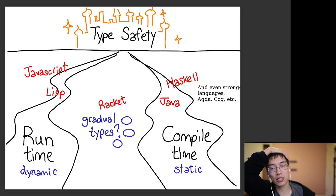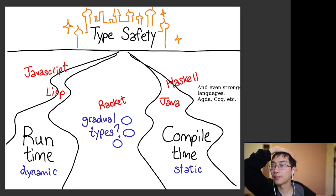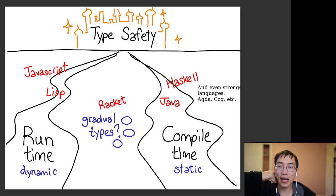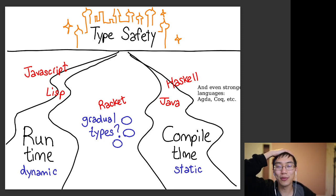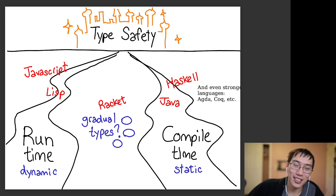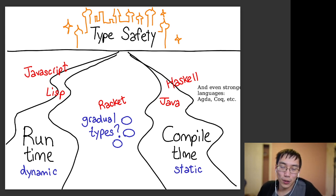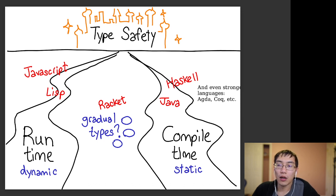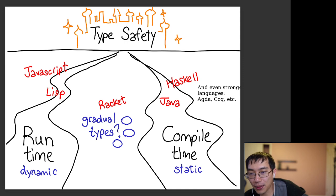Any questions about the distinction between compile-time and runtime type safety? Bob Harper also quips that dynamically typed languages aren't really untyped — they're 'uni-typed' systems, where everything has the same single type. Most people think about this in terms of when type checking happens: at compile time or at runtime.